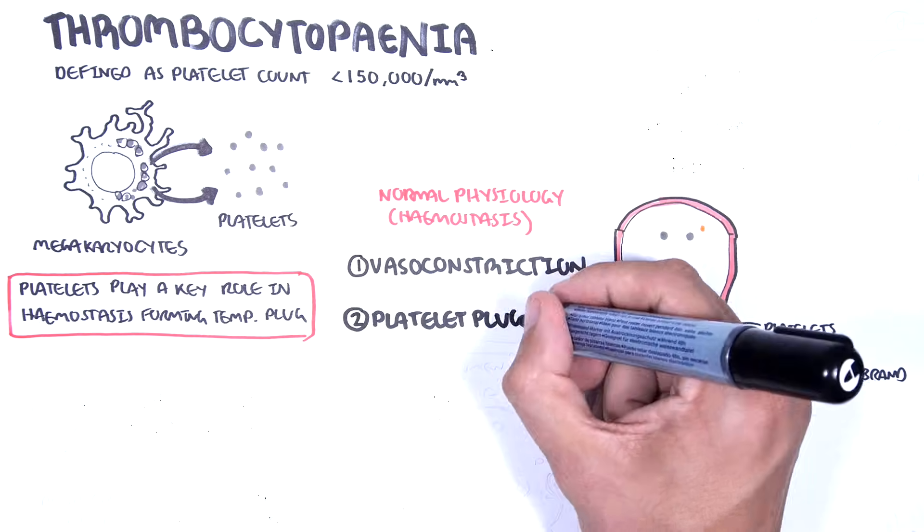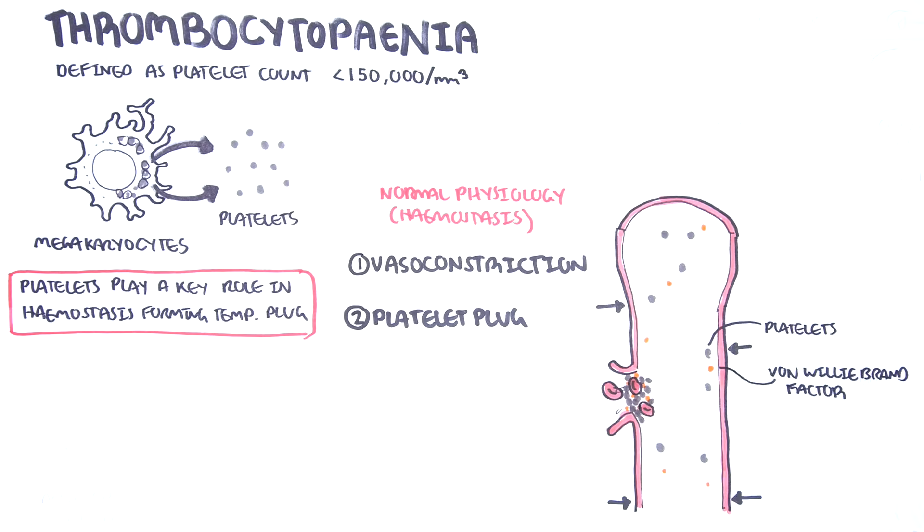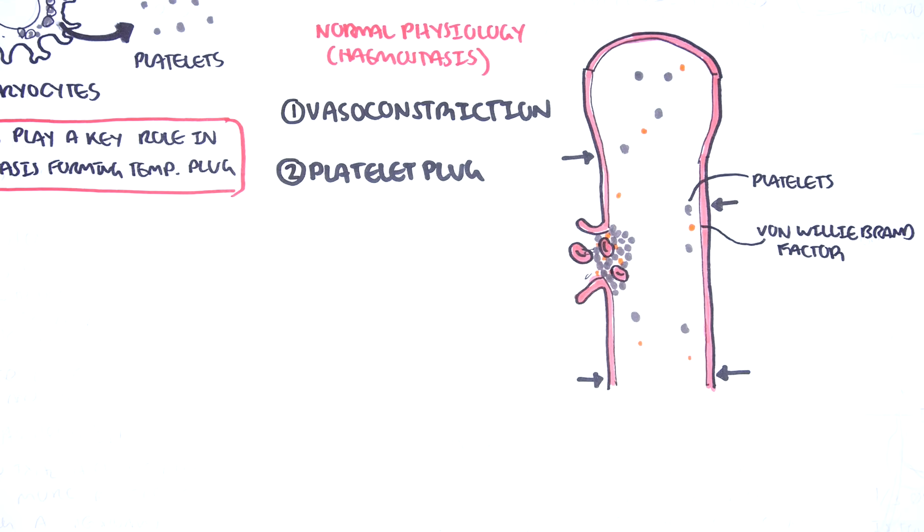The second step in hemostasis is platelet plug formation, where platelets bind onto the exposed collagen in the injured vessel with the help of von Willebrand factor.